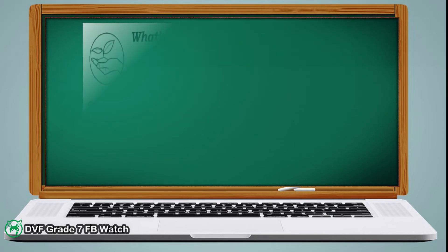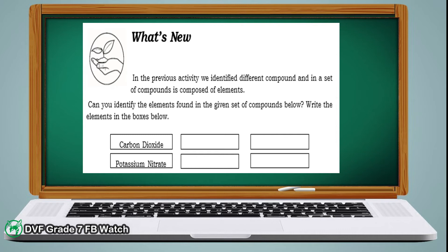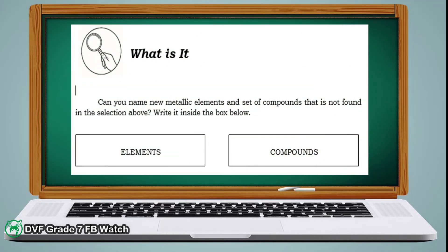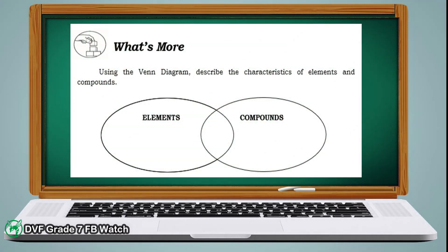Let's proceed to 'What's New.' In this activity, you're going to identify the elements found in the given set of compounds. You need to identify what are the two elements found for carbon dioxide and for potassium nitrate. In 'What Is It,' you need to enumerate at least five metallic elements and another five compounds that are not found in the given selection. Moving on to 'What's More' — using the given Venn diagram, you are going to describe the characteristics of elements and compounds. Copy the Venn diagram on your paper and write down your answers inside the box.